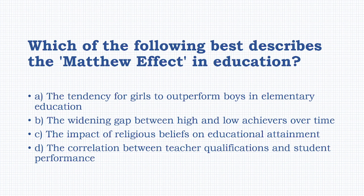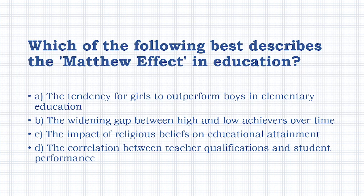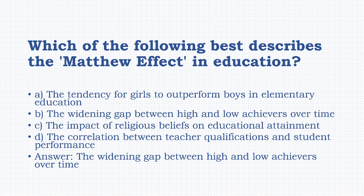Which of the following best describes the 'Matthew Effect' in education? Options: the tendency for girls to outperform boys in elementary education, the widening gap between high and low achievers over time, the impact of religious beliefs on educational attainment, the correlation between teacher qualifications and student performance. The answer is: the widening gap between high and low achievers over time.